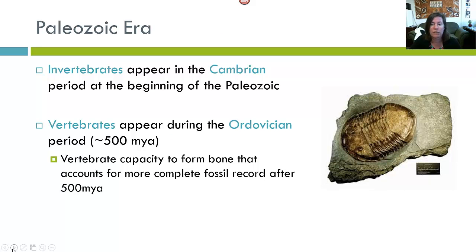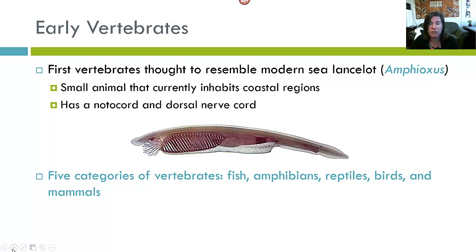During the Paleozoic Era, invertebrates first appear during the Cambrian Period at the very beginning of the Paleozoic. Vertebrates appear during the Ordovician Period, about 500 million years ago. It's the vertebrate capacity to form bone that accounts for the much more complete fossil record after 500 million years ago. The first vertebrates are thought to resemble a modern sea lancelet called Amphioxus — a small animal inhabiting coastal regions with a notochord, a primitive backbone, as well as a dorsal nerve cord.